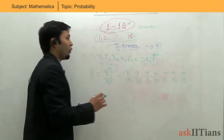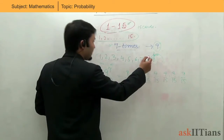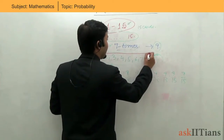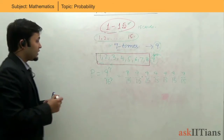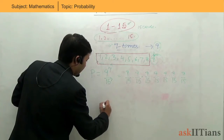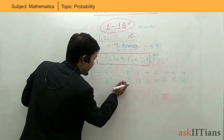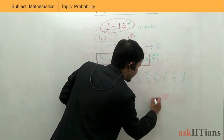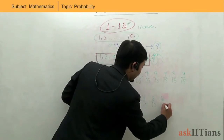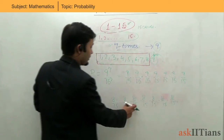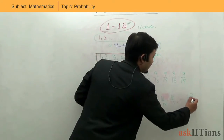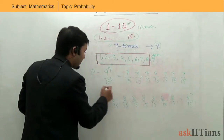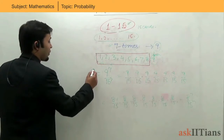Now, when it is given that 9 is the highest number, that means numbers 1 to 8 are not coming as the highest. So for those cases the probability would be 8 by 15, multiplied seven times: 8 by 15 into 8 by 15 into 8 by 15 — that is 8 to the power 7 by 15 to the power 7. These represent the times when 9 is not coming.